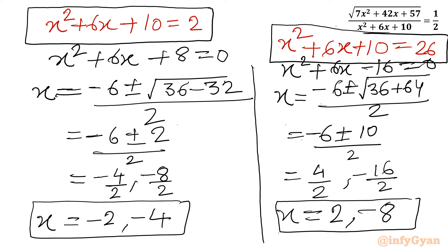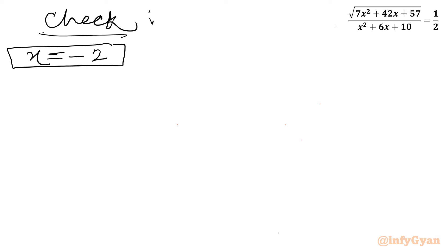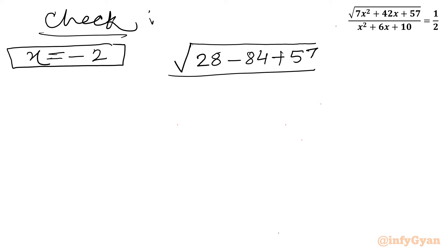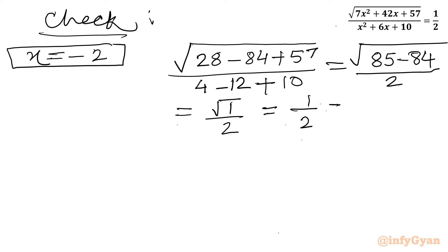Let us cross-examine all four solutions. Check x = -2: LHS numerator is 7(4) + 42(-2) + 57 = 28 - 84 + 57 = 1. Denominator is 4 - 12 + 10 = 2. So LHS = √(1/2) = 1/2 = RHS. Hence this solution is true and verified.